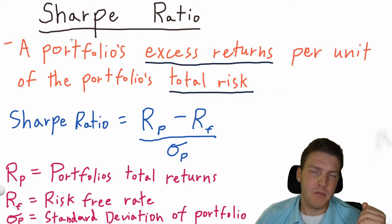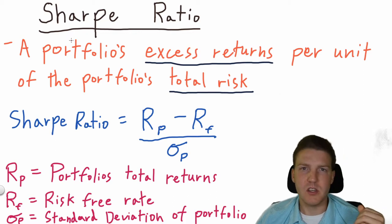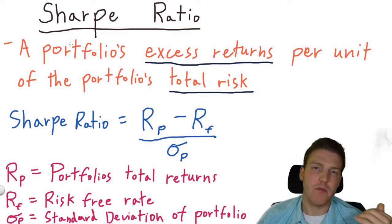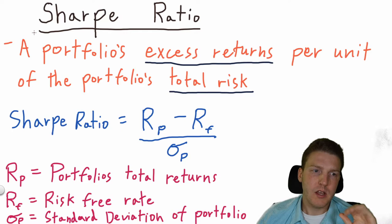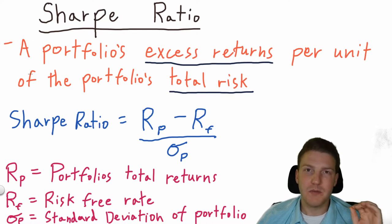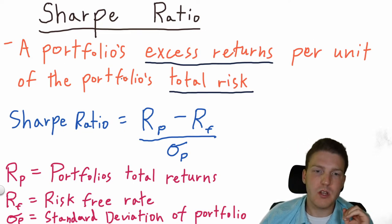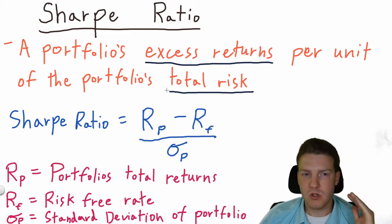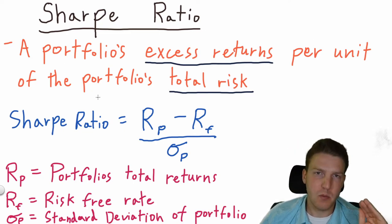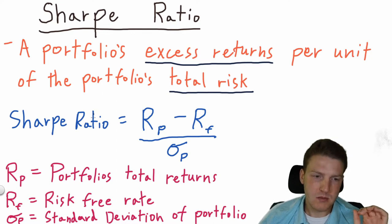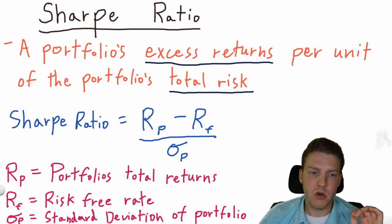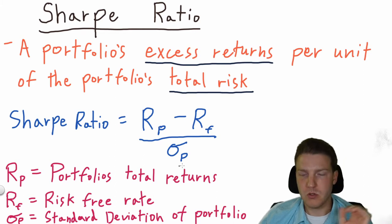The Sharpe ratio is the most commonly used metric to measure a portfolio's performance. The Sharpe ratio is defined as a portfolio's excess returns per unit of the portfolio's total risk. Looking at the formula in blue, we see that the Sharpe ratio equals the portfolio's total returns minus the risk-free rate divided by the standard deviation of the portfolio.